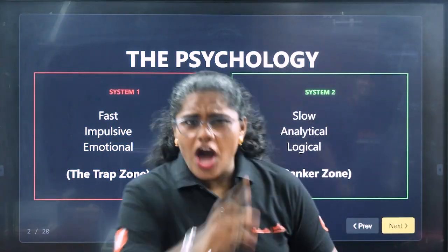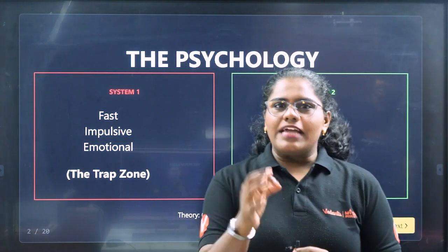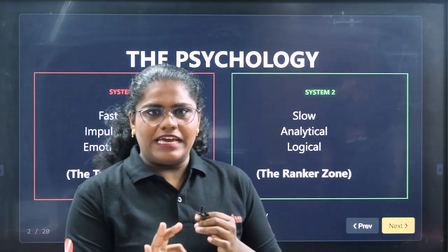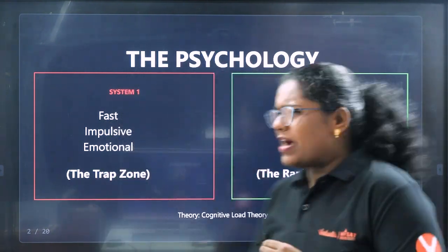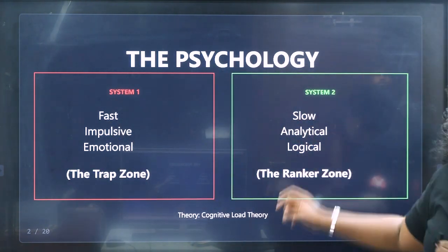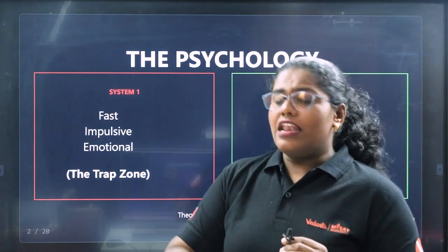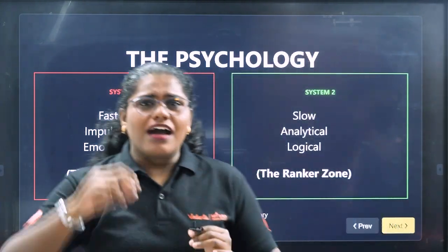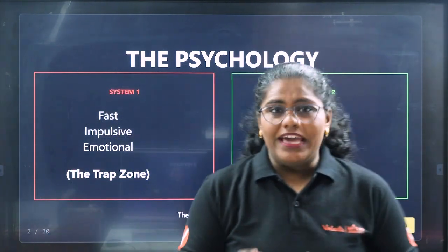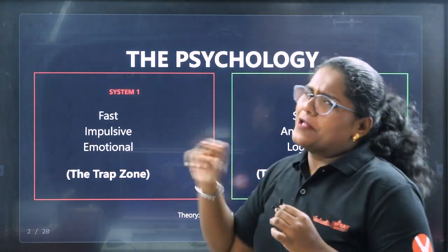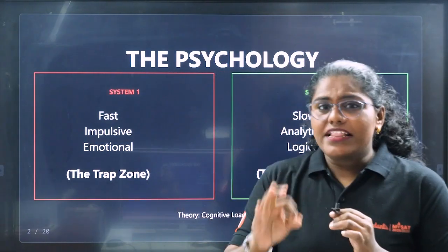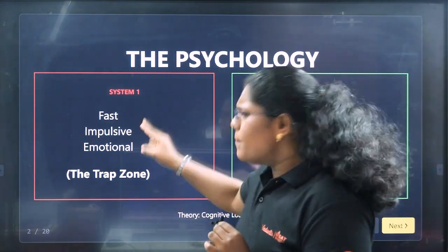Let's look at Cognitive Load Theory in action. Trap number 1 is the Mathematical Mirage — this trap is in unit conversion. It seems simple but is actually complex. For example, calculate the heat energy for 100 grams of water. The specific heat capacity is 4200 joules per kilogram. The input mass is 100 grams.